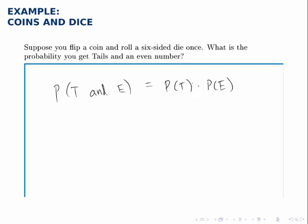Since these events are independent, we can do this. In other words, flipping the coin has no effect on what the die is going to do. So these events are independent, they don't change each other in any way.